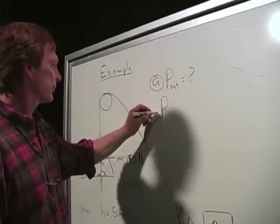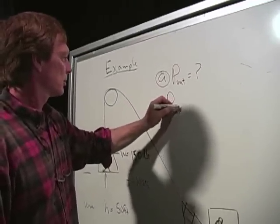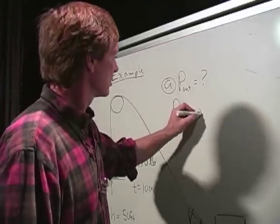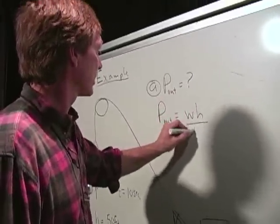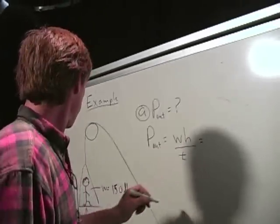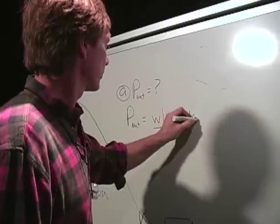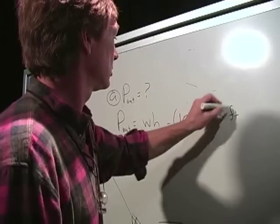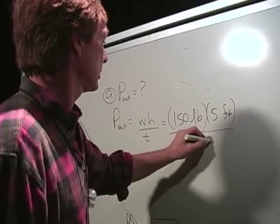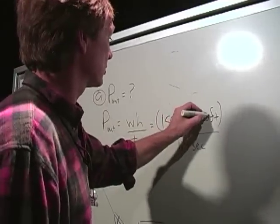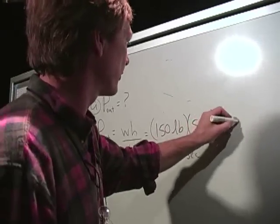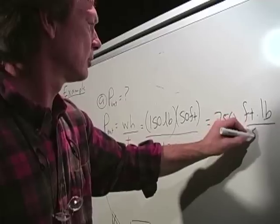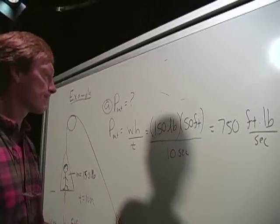Well, see, the output power is the work over time. In this case, the work is the weight times the height divided by the time it took to do it. That's going to be 150 pounds raised 50 feet in 10 seconds. So that's going to be 750 foot-pounds per second. I'll circle that.